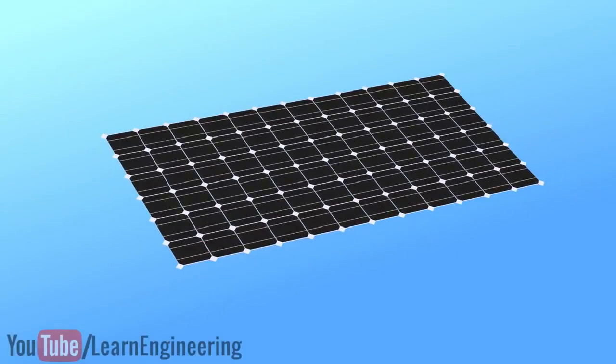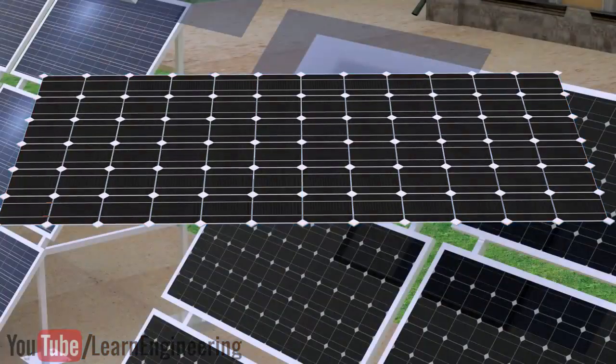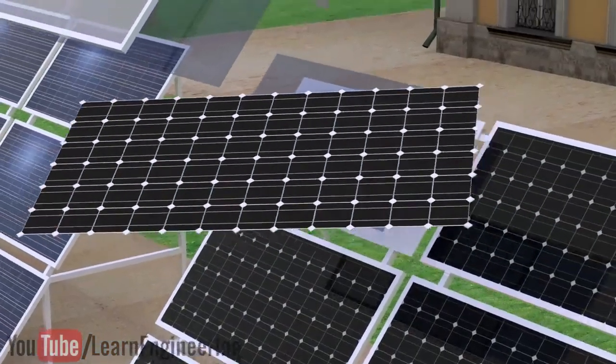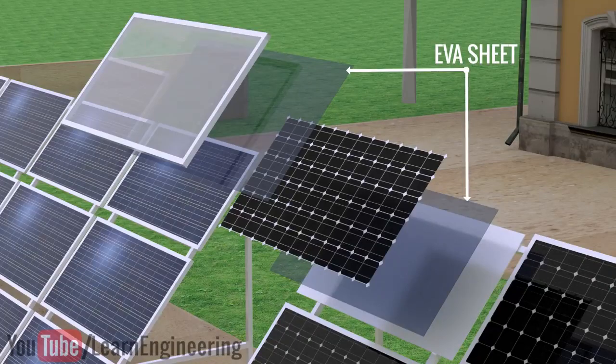A single PV cell produces only around 0.5 voltage. The combination of series and parallel connection of the cells increases the current and voltage values to a usable range. The layer of EVA sheeting on both sides of the cells is to protect them from shocks, vibrations, humidity and dirt.